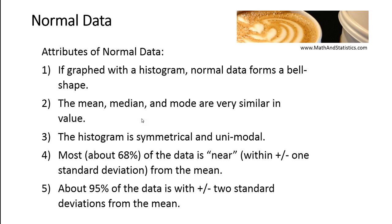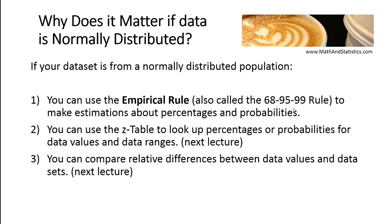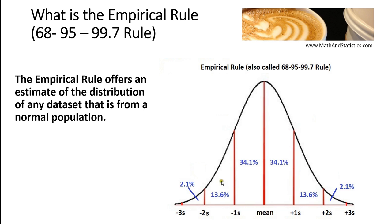To learn more about other distributions of data such as skewed or uniform, check out my other video on data distributions. In this video, we're going to focus on data that's normal and what we can do with it using the empirical rule. The empirical rule — also called the 68-95-99 rule — tells us that if we know our data is normally distributed and we know the mean and standard deviation, we can start estimating probabilities, percentages, or area under the normal curve of where we expect most of our data to be.